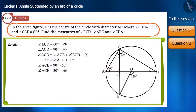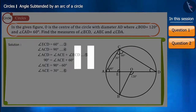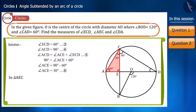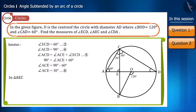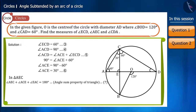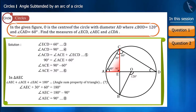You can pause the video and find the value of angle AEC by yourself. Looking at triangle AEC, we know that the sum of the three angles of a triangle is 180 degrees. We know the measurement of both the other angles, so you will get the value of angle AEC as 90 degrees.